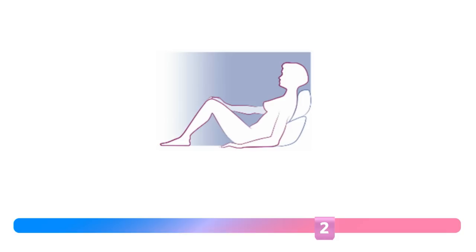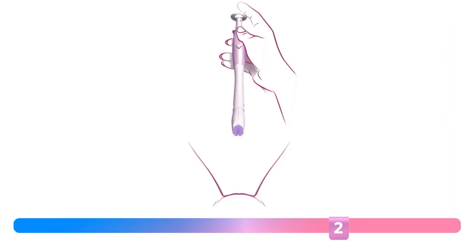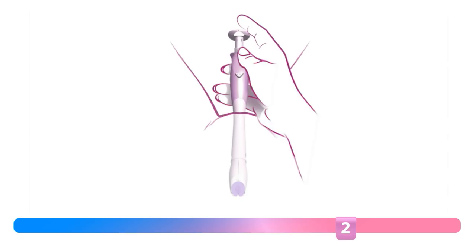Holding the applicator as shown and using no lubricant, introduce it into the vaginal tract, sliding gently until the tip reaches the cervix and you can no longer advance. Do not continue to force the applicator into the vaginal tract if excessive resistance is felt. You may feel slight pressure as the cervical cap meets the cervix, but you should not feel discomfort or pain.